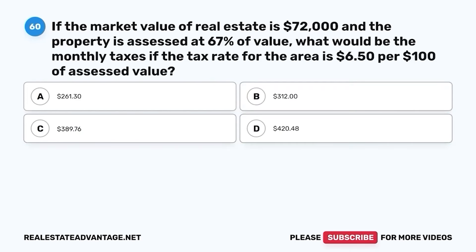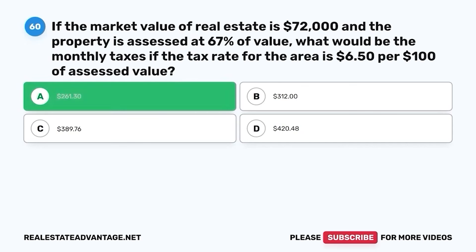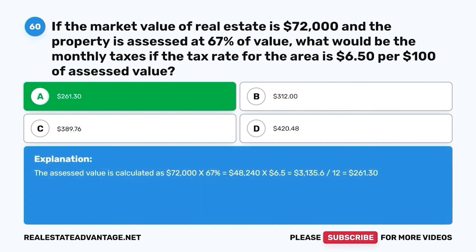Question 60. If the market value of real estate is $72,000 and the property is assessed at 67% of value, what would be the monthly taxes if the tax rate for the area is $6.50 per $100 of assessed value? A. $261.30. B. $312. C. $389.76. D. $420.48. The correct answer is A. $261.30. The assessed value is calculated as $72,000 times 67% equals $48,240. $48,240 times $6.50 equals $3,135.60. $3,135.60 divided by 12 equals $261.30.